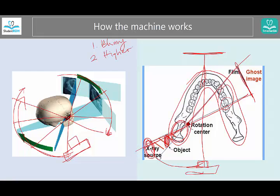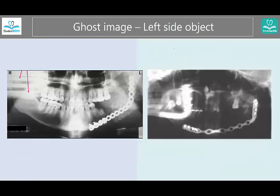For example, if you had an earring, the ghost image is going to be a little higher up than the ear level. Third, it is going to be on the opposite side — if the earring was on the right side, the ghost image is going to be on the left side. Those are the three characteristics.